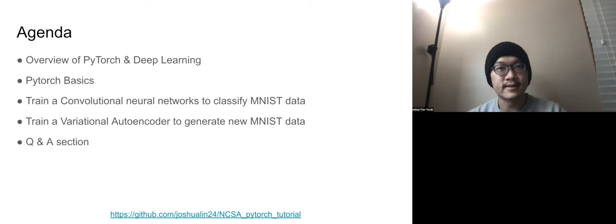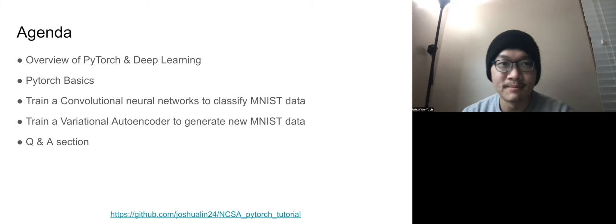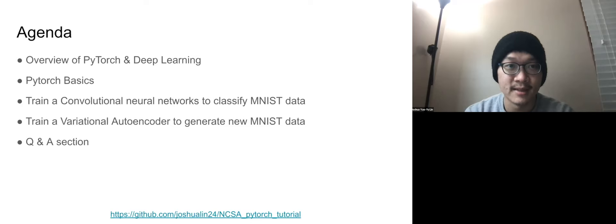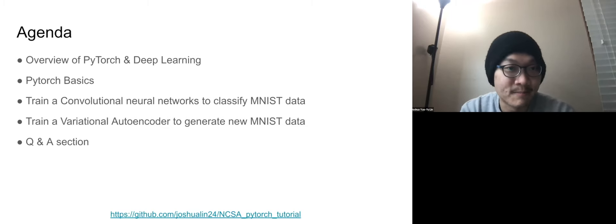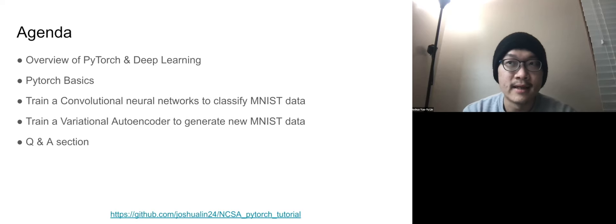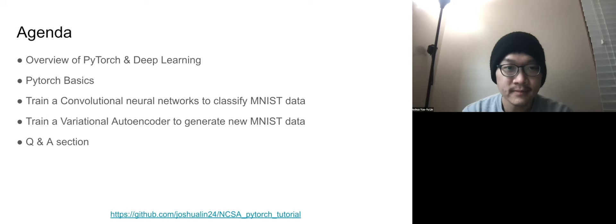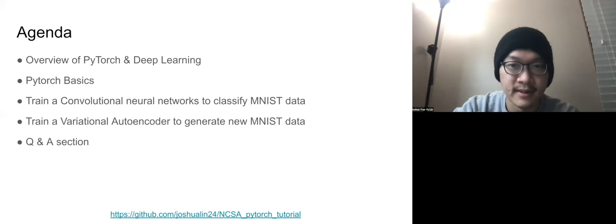The agenda for this talk is: first, I'll give you an overview of what PyTorch is and a high-level description of what deep learning is. Then I'll go to a notebook that gives you some idea about how PyTorch works and how to do things with it. After that, we're going to train a simple convolutional neural network to classify the MNIST handwritten digits dataset. Then I'll give an example of how to use PyTorch to build a variational autoencoder to generate new data. Finally, there'll be a Q&A section.